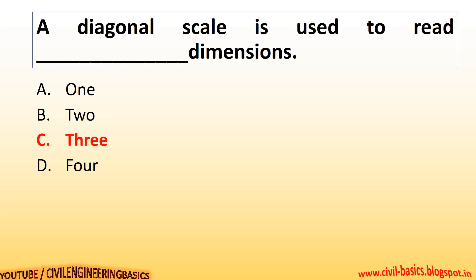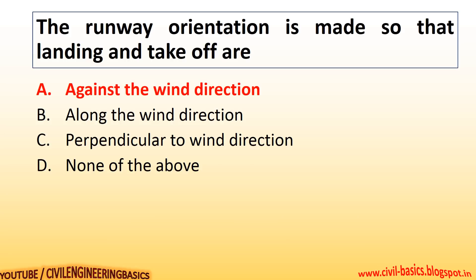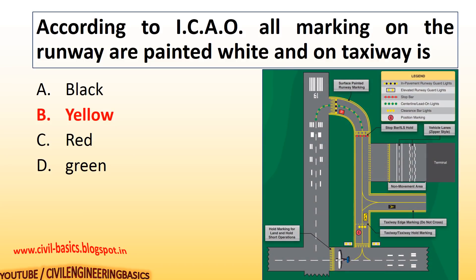A diagonal scale is used to read three dimensions. The runway orientation is made so that landing and takeoff are against the wind direction. According to ICAO, all markings on the runway are painted white and on the taxiway are yellow.